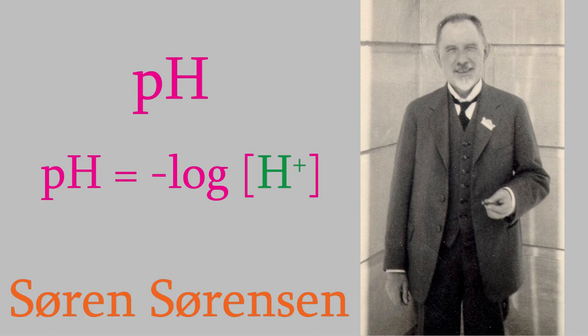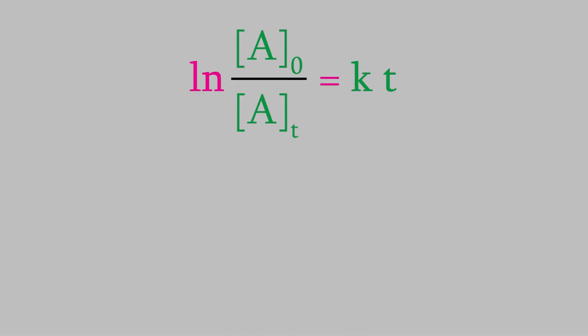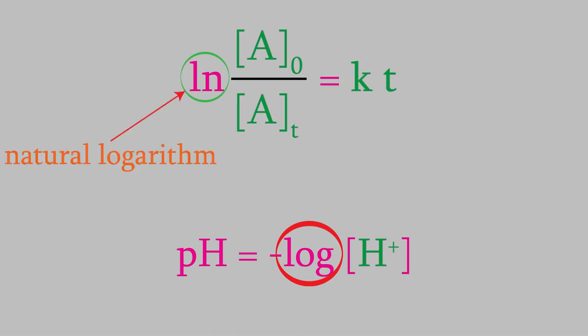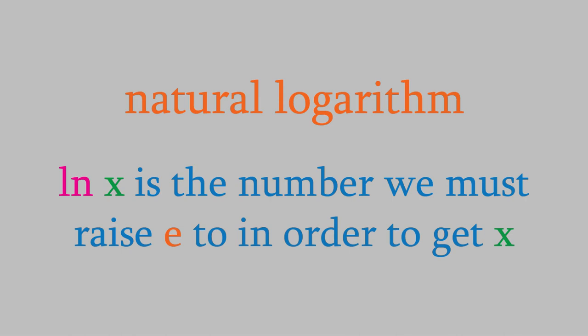You might remember that we've seen logarithms before when we studied first-order reactions. Back then, we used this equation. But notice that this is not the same kind of logarithm we used in that earlier video. In the first-order equation, we had ln, which is called the natural logarithm. You might remember that the natural log of a number is the exponent we must raise e to in order to get the number we're taking the log of.